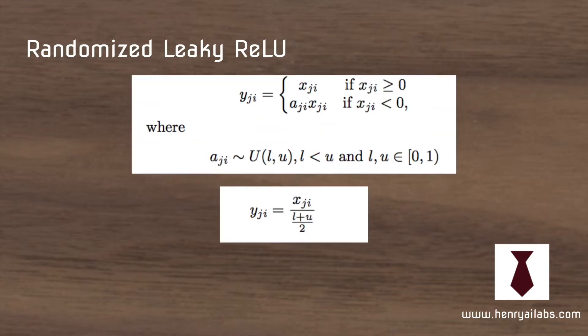Randomized leaky ReLU is probably the most interesting variant of ReLU. Instead of learning alpha or presetting it, the function samples it from a random distribution, which could be uniformly distributed or scale-free. During testing, they fix it to a certain value.